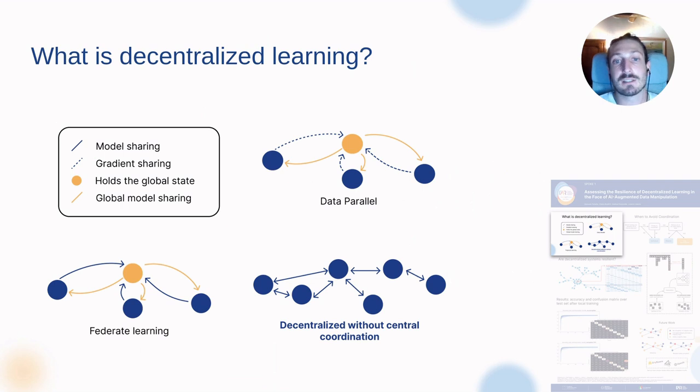The main difference between a data parallel scenario, a centralized scenario as we call it, and a decentralized scenario is that in the data parallel scenario we have a device which holds the global state, shares it with some peers together with a portion of the dataset. The local peers use the local dataset to compute the gradients, share the gradients back to the parameter server which manages to collect them and merge and blend them. The dataset is shared and the model is shared all across the network and we have a global state.